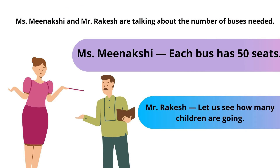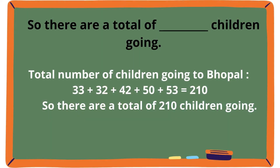Miss Meenakshi and Mr. Rakesh are talking about the number of buses needed. Miss Meenakshi says each bus has 50 seats. Mr. Rakesh says let's see how many students are going. To find out the number of children going, we have to add them all: 33 plus 32 plus 42 plus 50 plus 53 is equal to 210.